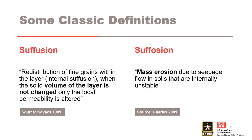This slide presents two classic definitions for the internal erosion process due to internal instability. A couple of key modern concepts appear in these classic definitions. With suffusion, the volume of the internally unstable soil layer is unchanged, and suffusion involves mass erosion due to seepage flow.